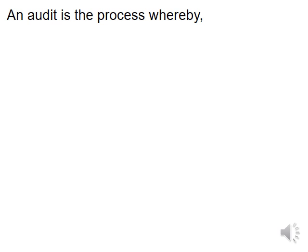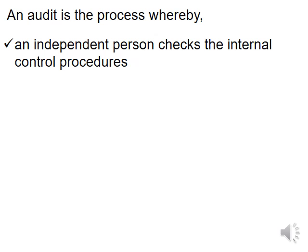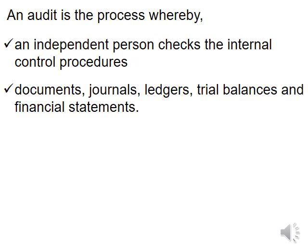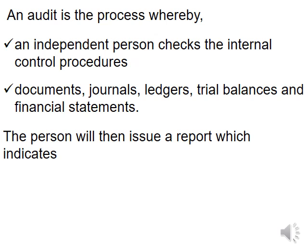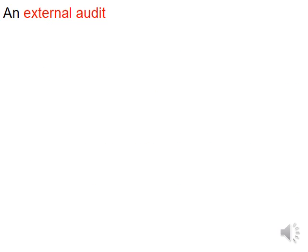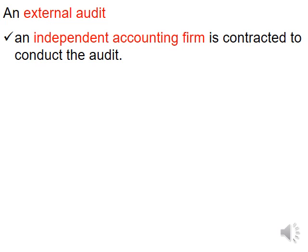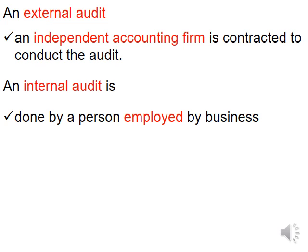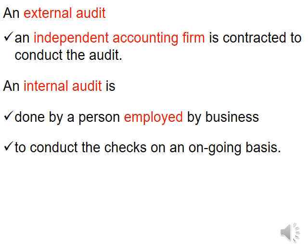An audit is the process whereby an independent person checks the internal control procedures, documents, journals, letters, trial balances, and financial statements. This person then issues a report indicating their opinion on whether the figures in the financial statements can be relied upon. An external audit is when an independent audit firm is contracted to conduct the audit. An internal audit is done by a person employed by the business to conduct checks on an ongoing basis.